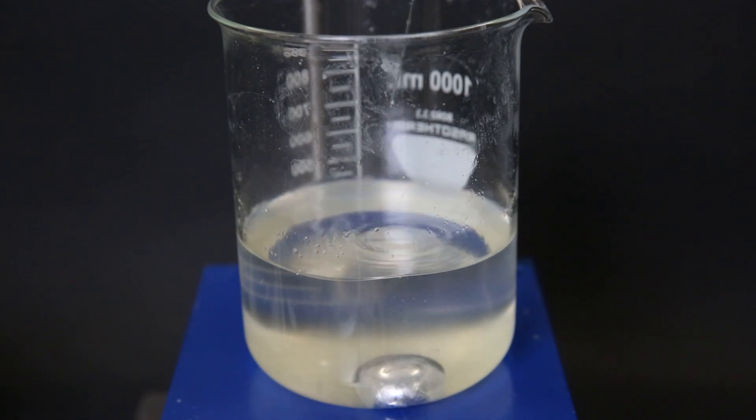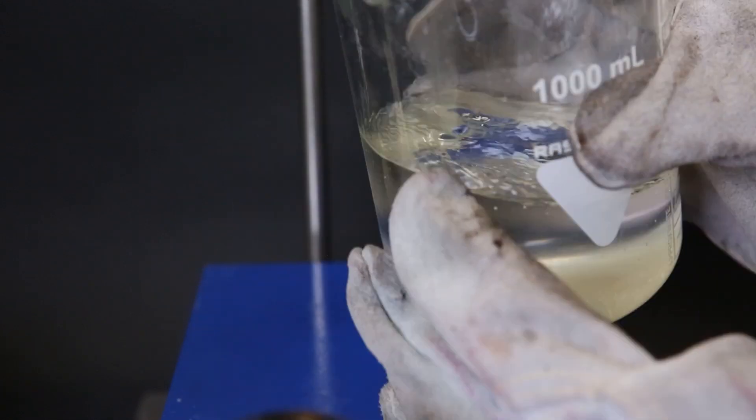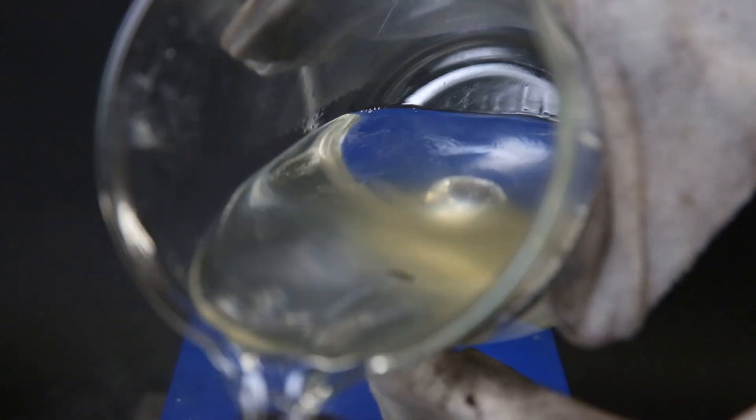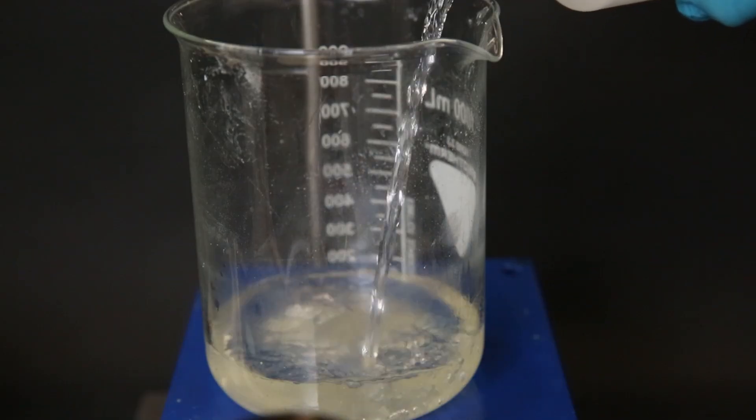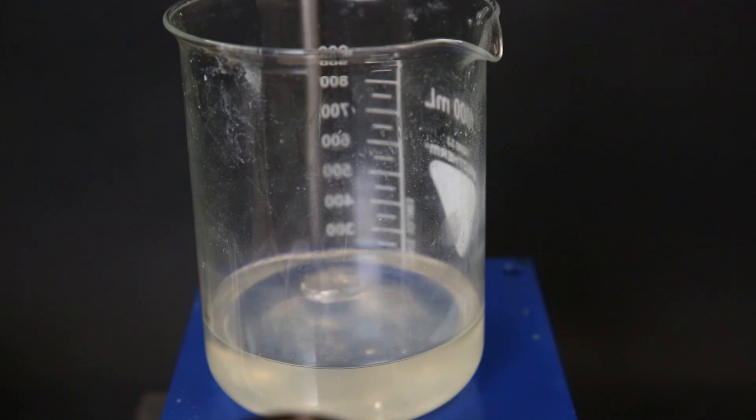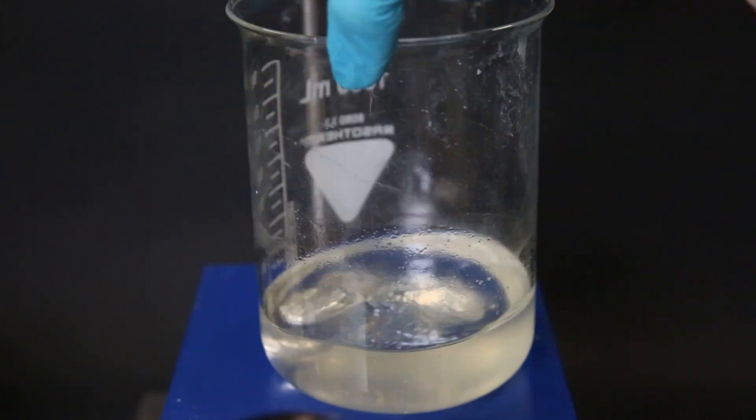So to quickly solidify the sodium I simply pour out most of the hot toluene and then I add in some fresh toluene. And now I have one big piece of solid sodium.